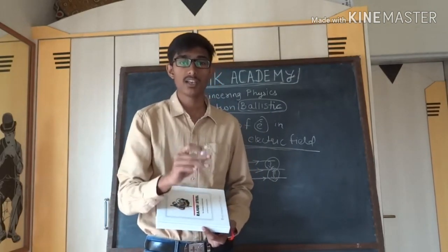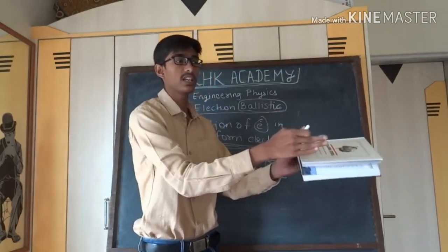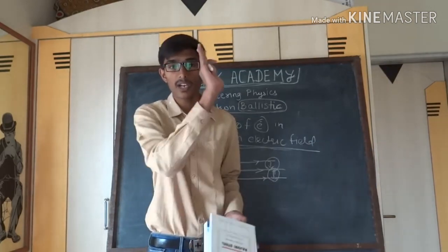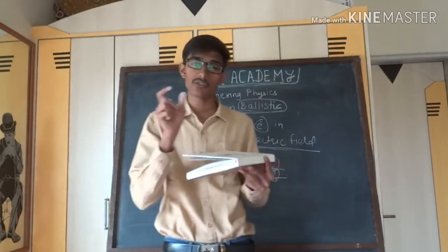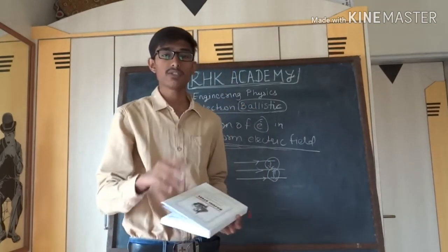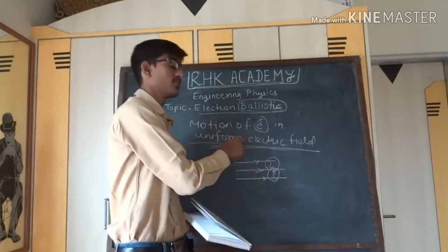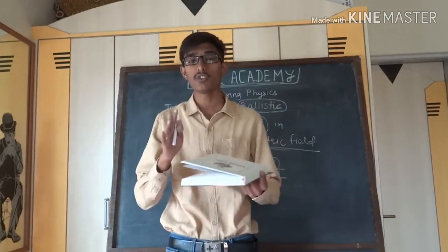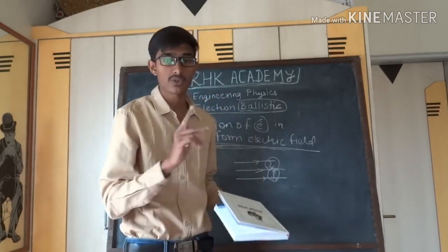There are three cases possible: one case is that the electric field is applied parallel to the electron motion; another is that it is applied perpendicular to the electron motion; or it is applied at an angle theta to the electron motion. In today's session we will discuss only two cases — uniform electric field applied parallel to electron motion, and uniform electric field applied perpendicular to the electron motion.